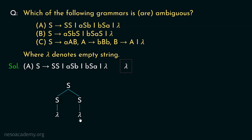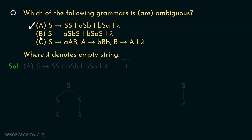No matter how many lambdas we derive, we get the empty string. Now, starting from the start symbol S again, using S → lambda directly, we can derive lambda in one step. So with grammar A, we can derive the empty string in more than one way — clearly it's ambiguous.